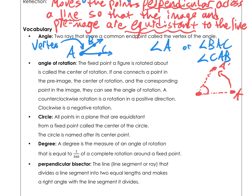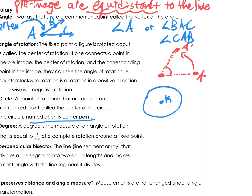A circle is all the points that are equidistant — equidistant means the same distance — from a center point. The way we name a circle is by its center point. So if the center point is called K, then we would call this circle K.